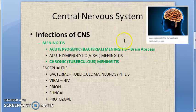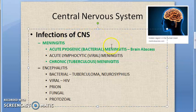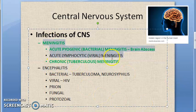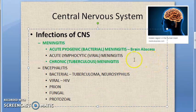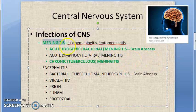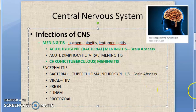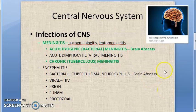So we have completed the developmental anomalies section. In the next video, we will continue with infections of the central nervous system — meningitis, encephalitis, and more — as that is important for the exam. See you in the next video.